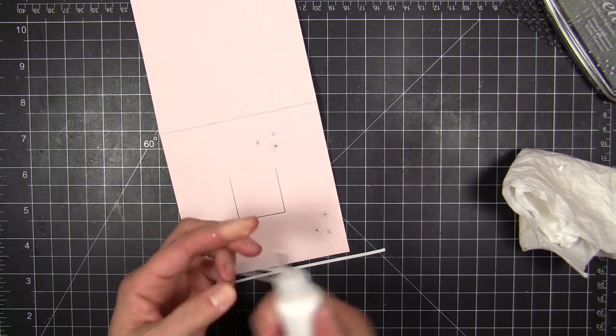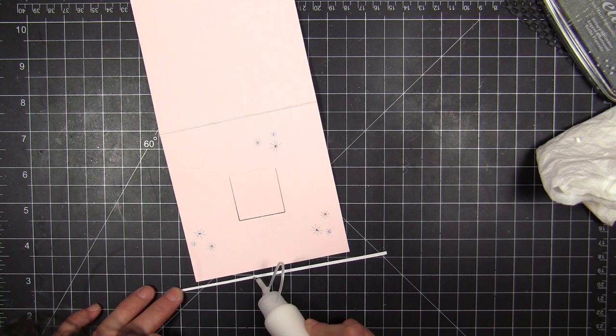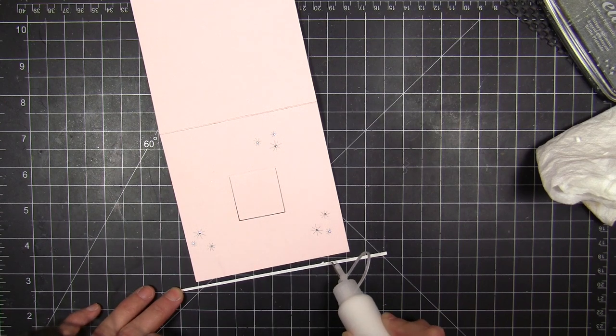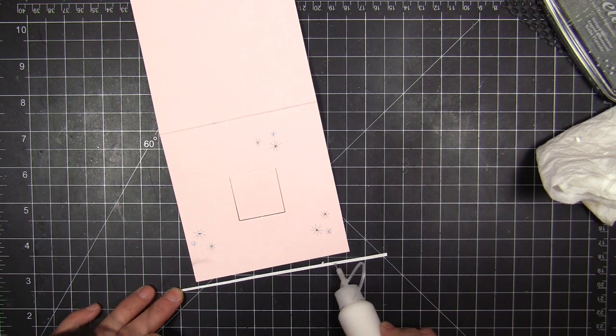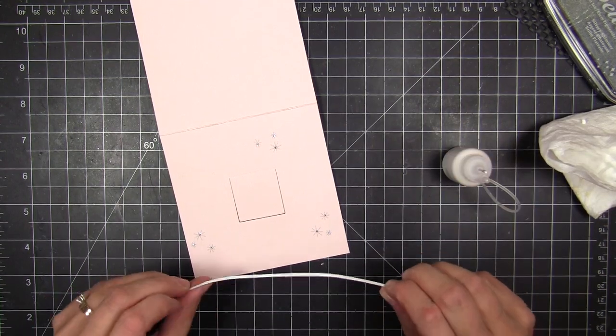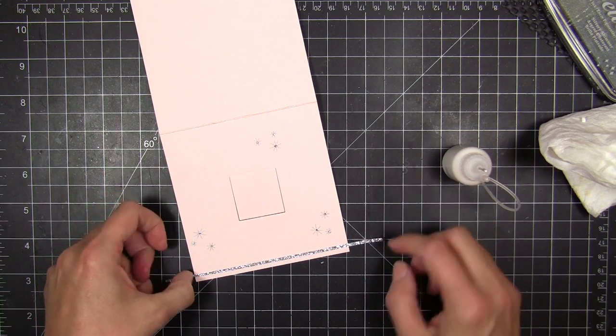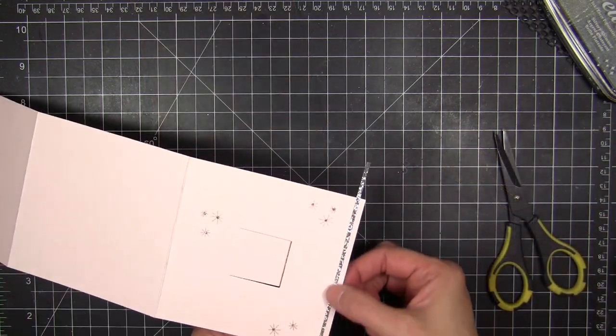And then I decided to embellish the snowflakes with a little bit of stickles in silver. And once it was dry, I felt like it needed just one more thing and I had this little strip of glitter paper left over from something else. And I was like, you know what, that's perfect. I'm going to grab that little scrap of silver glitter paper and run some glue, just a fine bead of glue along it. And then go ahead and mount that into place on the edge of the card.